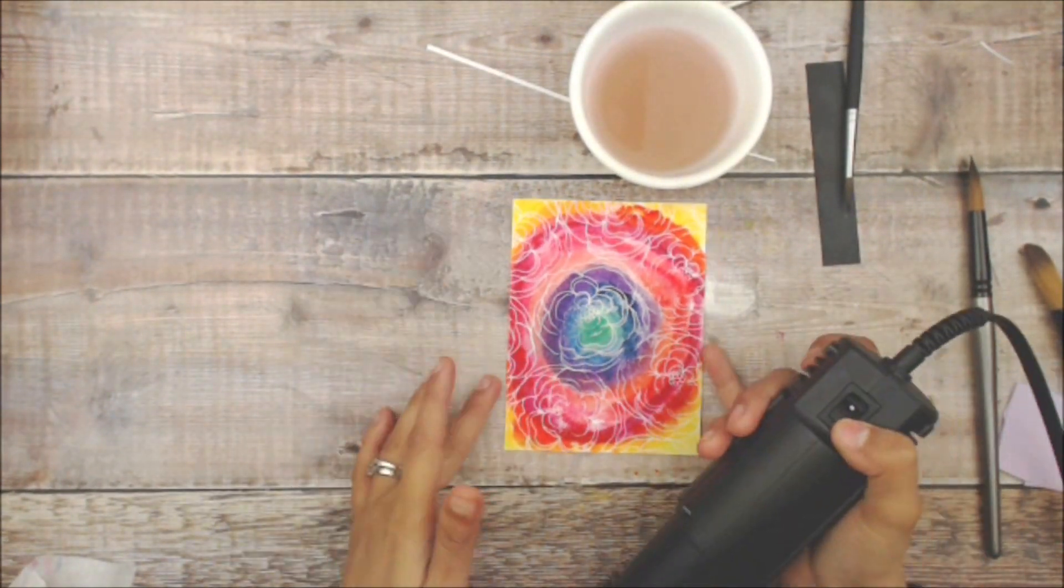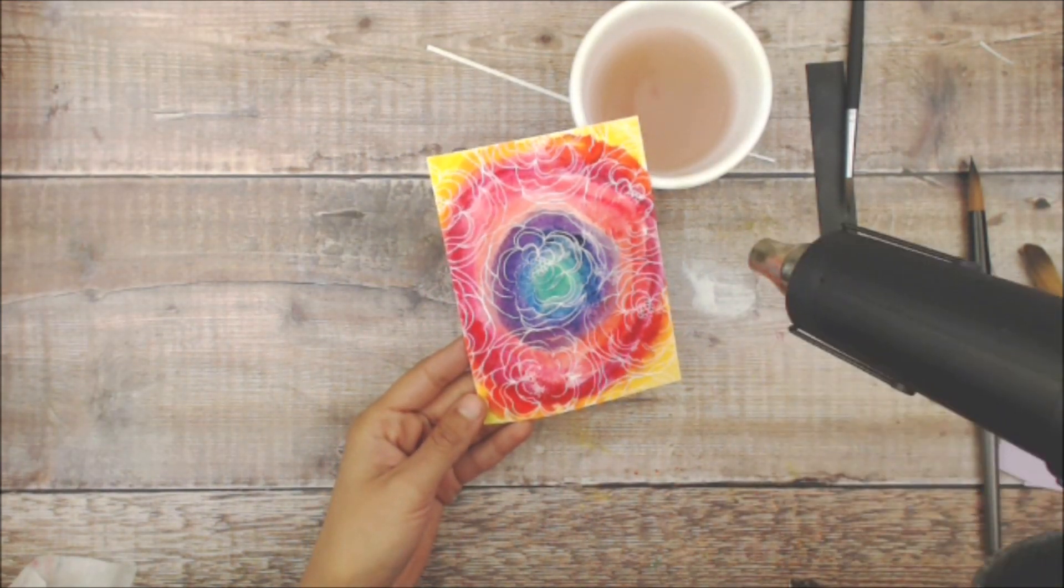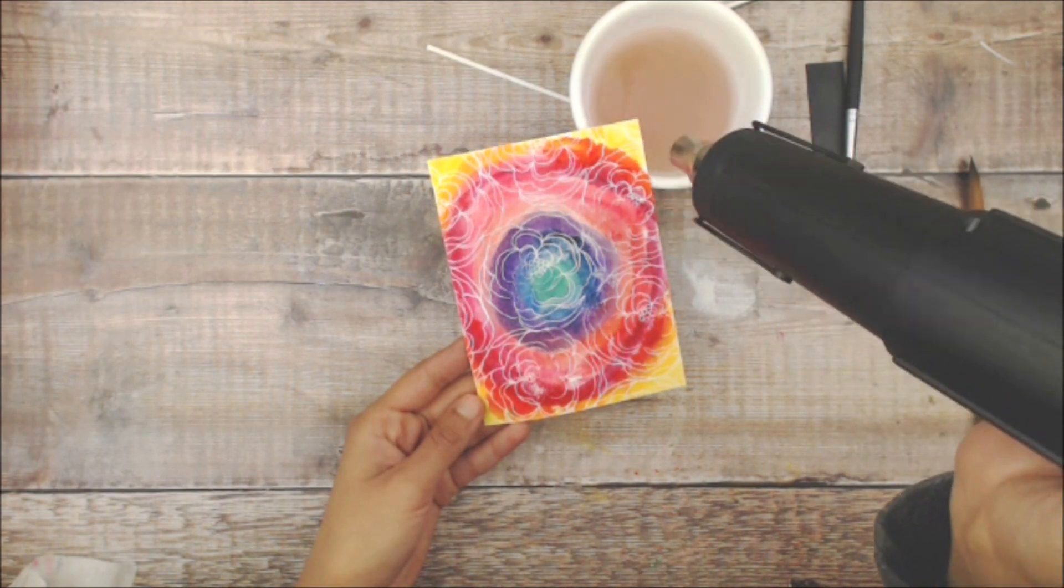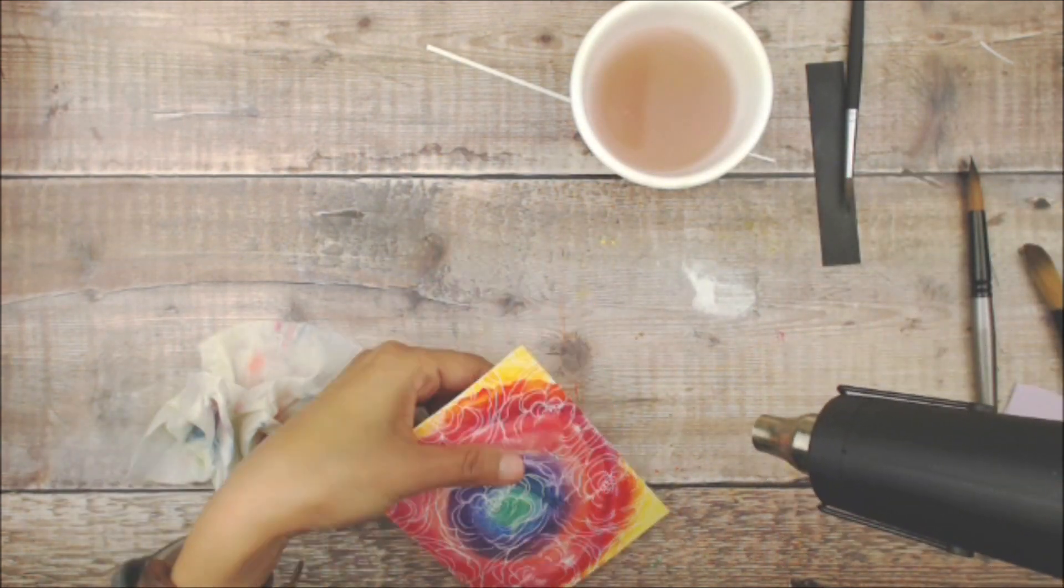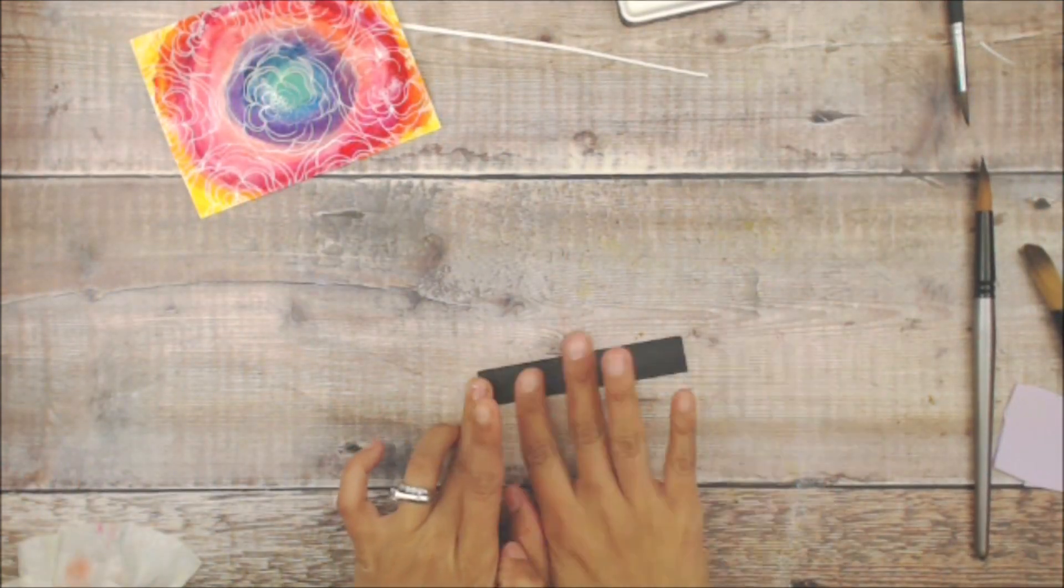Once that's done, we are going to speed up the drying process by using our heat tool. This will not mess up the heat embossing; it just allows it to set a little easier. Get our surface cleaned up.